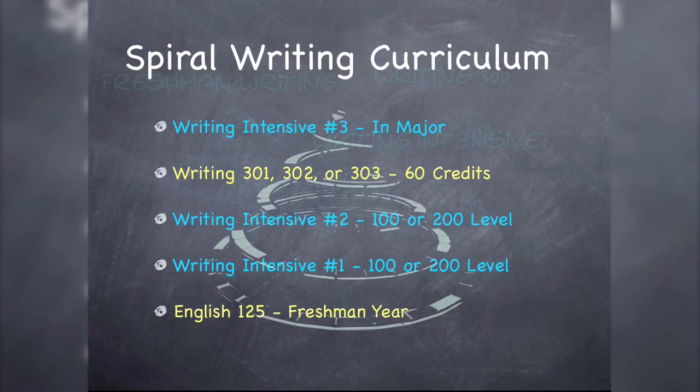Many of us know that York College has what we call a spiral writing curriculum. The spiral writing curriculum begins in the freshman year where students take English 125, our first-year composition course. It's followed up — in terms of graduation requirements — by students taking two writing-intensive designated courses in the general education core at the 100 or 200 level. Those are courses offered in the humanities, social sciences, or natural sciences, and students ideally take those courses in their first two years, before they reach 60 credits.